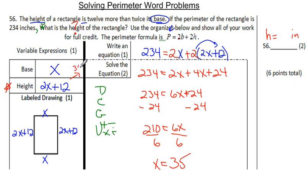So, if X is 35, it means I can put that 35 right there. Do 2 times 35 plus 12, which is getting me 70 plus 12, which is getting me 82. Making the height 82 inches.